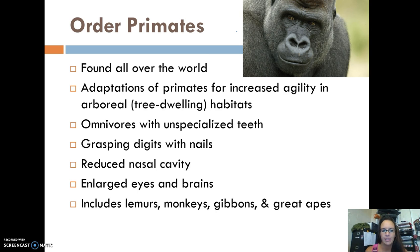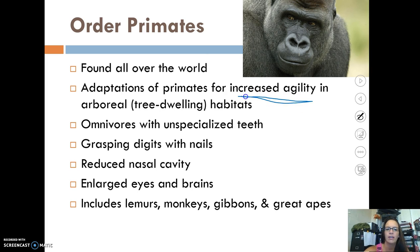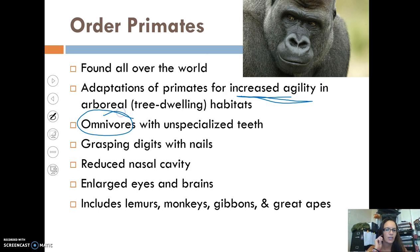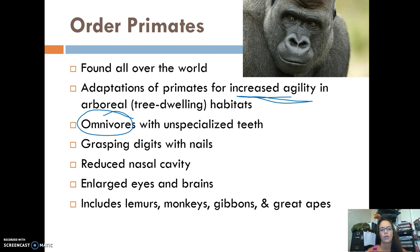Last up is order Primates, found all over the world. Primates are unique because they have increased agility for arboreal habitat — they all live in or around trees. They are omnivores with unspecialized teeth, eating both meat and vegetables. They have grasping digits with nails and opposable thumbs, a reduced nasal cavity, and enlarged eyes and brains. Examples include lemurs, monkeys, gibbons, and great apes.